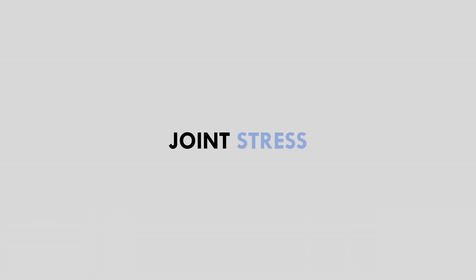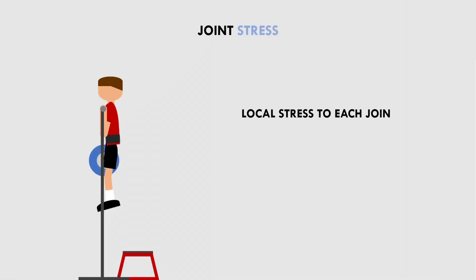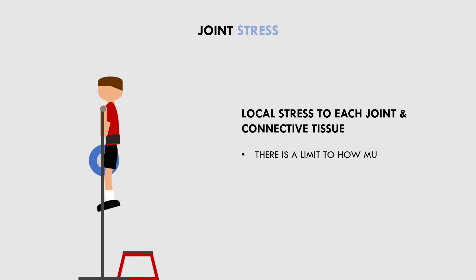First is joint stress. This refers to how much stress is experienced by a specific joint or region during the exercise. This is a local form of fatigue, meaning that joint stress on one tissue doesn't affect other tissues. Each exercise induces some form of joint stress to the joints involved, but some exercises induce more stress to different joints than others. There is ultimately a limit to how much stress each joint can handle before it experiences pain or irritation.